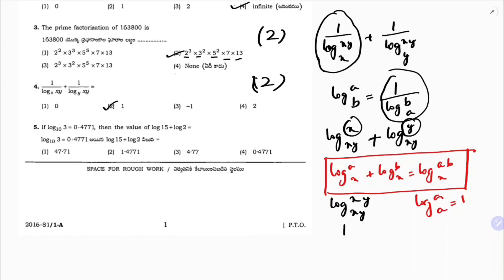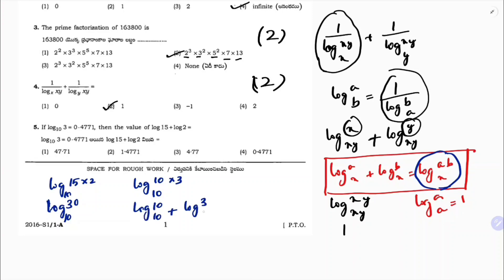Fifth question: given log 3 value, find log 15 plus log 2. Using the product formula, log 15 plus log 2 equals log 30. We write log 30 as log (10 into 3) to the base 10, then split it as log 10 to the base 10 plus log 3 to the base 10, which is 1 plus 0.4771, giving 1.4771. The correct option is 2.